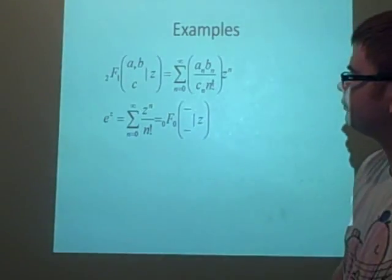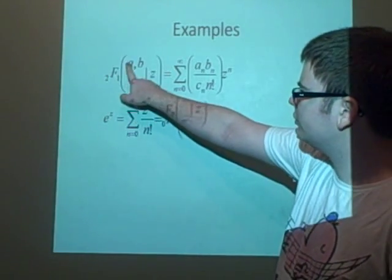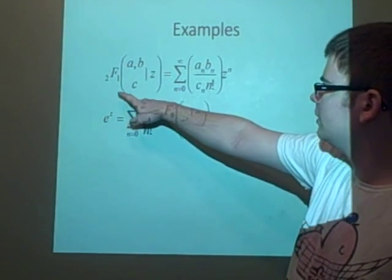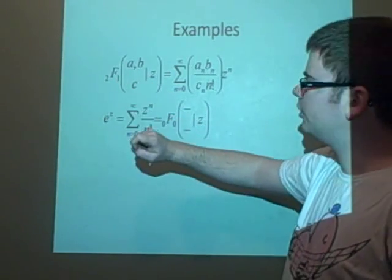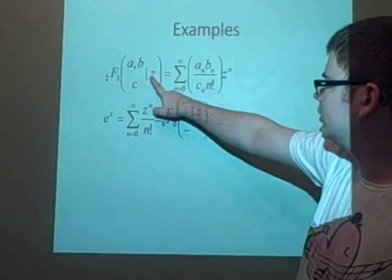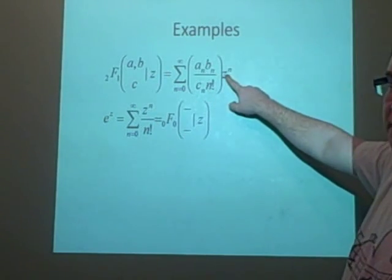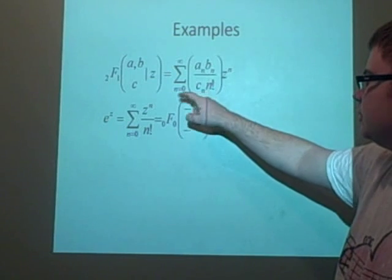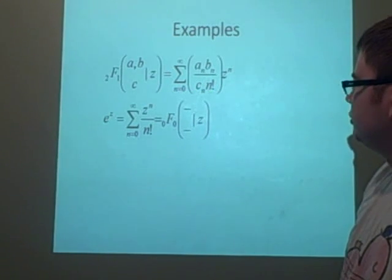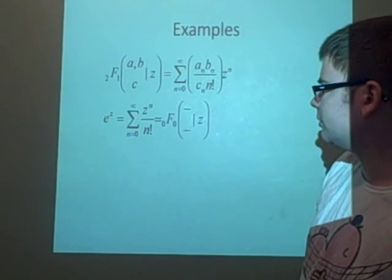Some examples. We've got a and b on the top, and we've got 2 because there's 2 up here, 1 because there's 1 here, and we've got our z. We've got the aₙ, the bₙ, the cₙ, and the n factorial. So that's how we're denoting that.